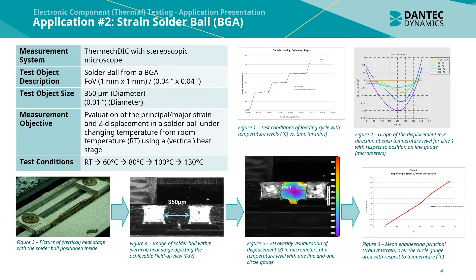Application 2 was a strain measurement application of a solder ball of a ball grid array. The solder ball itself was approximately 350 micrometres in diameter and the field of view using the stereoscopic microscope was approximately 1mm by 1mm. The measurement objective was to evaluate the principal or major strain and also the Z displacement in a solder ball under a change in temperature from room temperature using a vertical modified heat stage. Test conditions ranged from room temperature in stages up to 130 degrees.